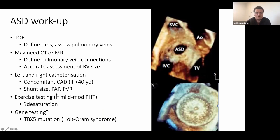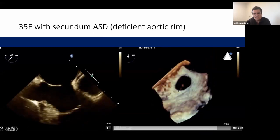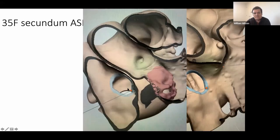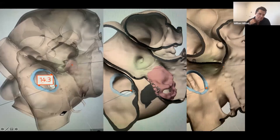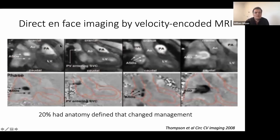Catheterization is usually done at the time of closure. Sometimes we do exercise testing, particularly if there are elevated pulmonary pressures and concerns about saturation. We usually get TOE imaging, and increasingly are using 3D TOE. CT reconstructions are increasingly useful — I had a model made to show how clear the anatomy is, particularly how the deficient aortic rim extends along a significant segment, meaning the device would have to splay up on the aorta. MRI on fast imaging can sometimes be useful for defining the defect and detecting others.